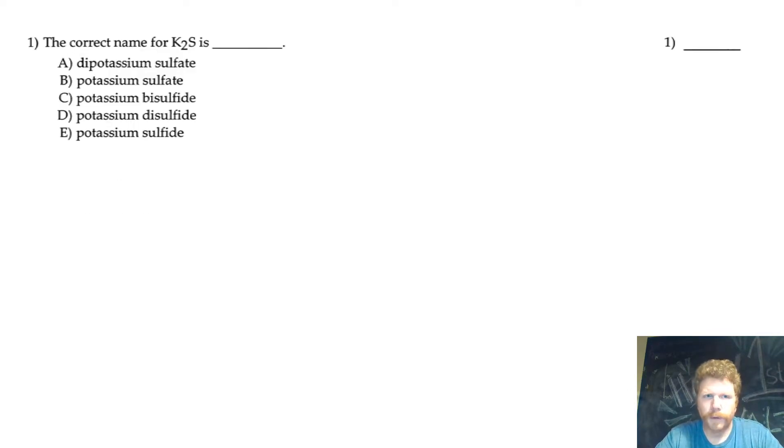This first problem is what is the correct name for K2S? What you have to recognize in order to do this problem is you have to recognize this is an ionic compound. If you remember on the periodic table, you have on the left hand side your metals, on the right hand side you have your non-metals. What you're looking at here is a combination of K which is a metal potassium and S which is a non-metal sulfur.